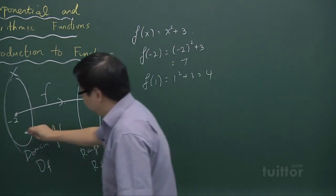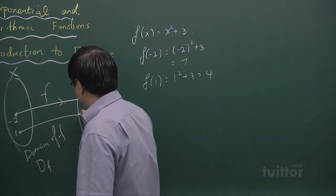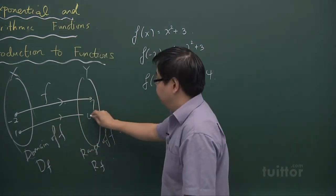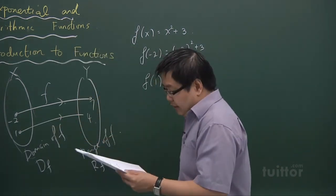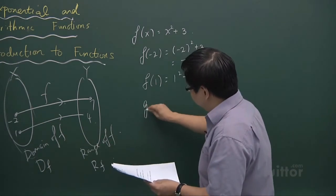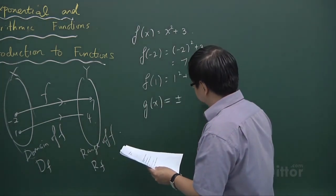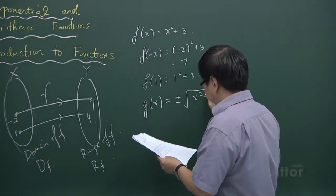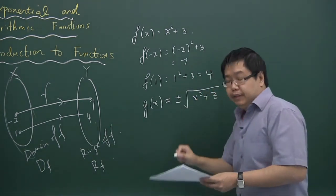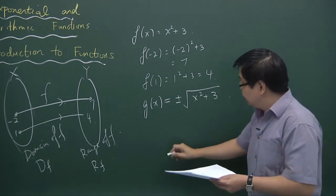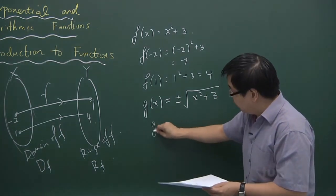Let me give another situation where it's not a function. This g is not a function. Why is that so? Because if you substitute 1 inside, you get plus minus root 4, that gives you plus minus 2.